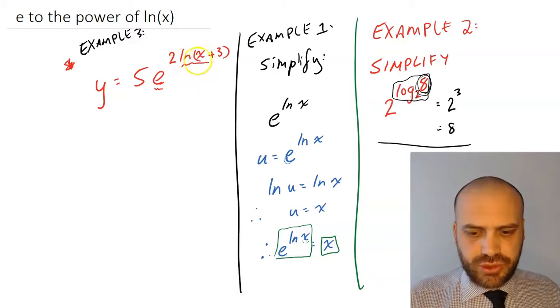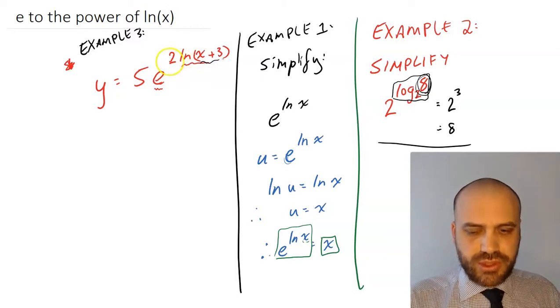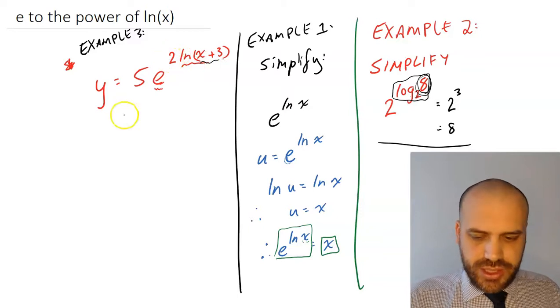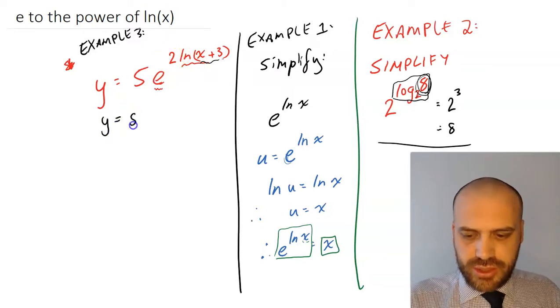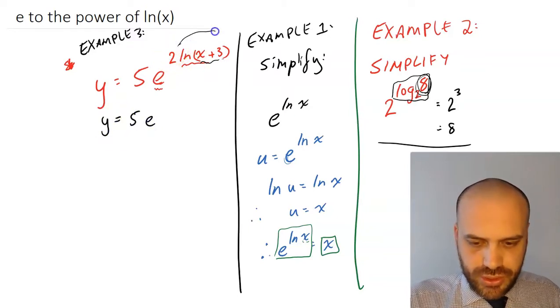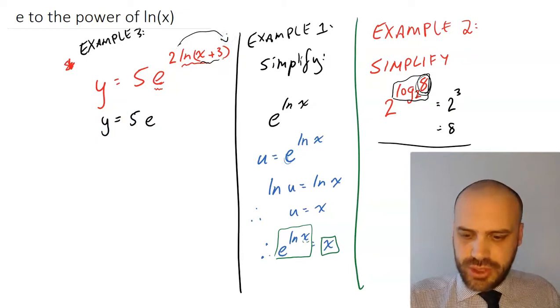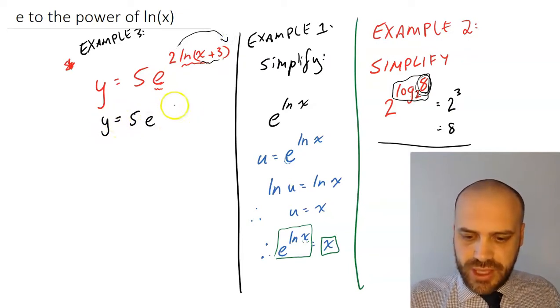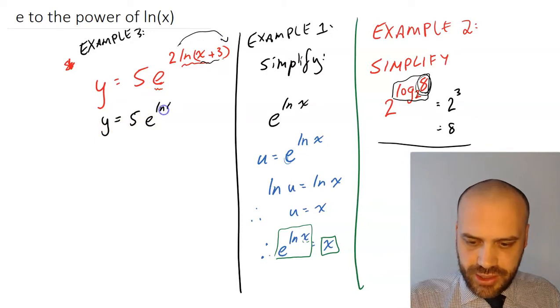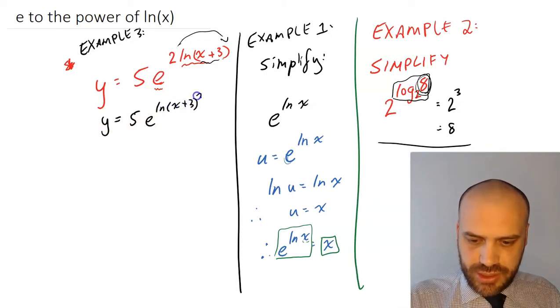It's being raised to a natural log, x plus 3. But it's got that 2 there. So I need to get rid of that 2. And the easiest way to do that is to put it into our log. So we'll have y equals 5e to the power of ln x plus 3 squared.